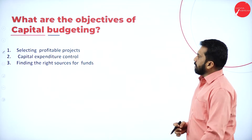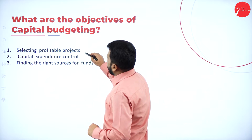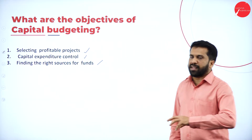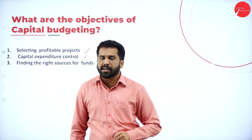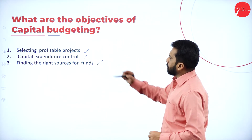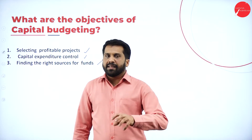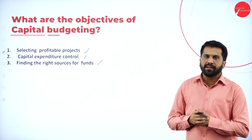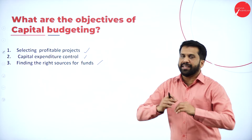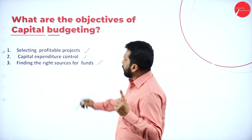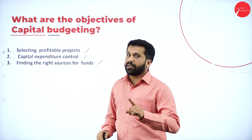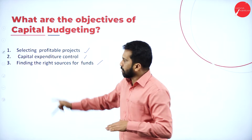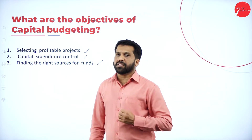What are the objectives of capital budgeting? There are three objectives. First: selecting a profitable project — if there are 10 projects, you have to select two or three which are profitable and give you more profit. Second: capital expenditure control — for every project you have to analyze which has less expenditure and less cost. Third: finding the right source for funds — once you select your project, identify from where you can invest. Remember, even though the price is least, the returns must be better; even at a moderate rate it may give you more return.